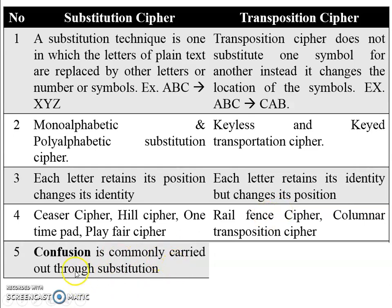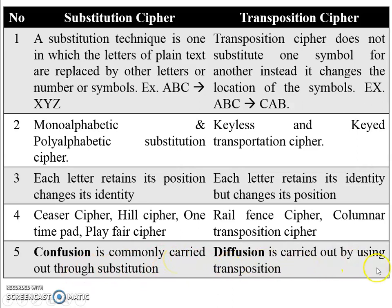Confusion is commonly carried out through substitution, and diffusion is carried out by using transposition. Confusion means it hides the relation between ciphertext and key. In diffusion, it hides the relation between plaintext and ciphertext.